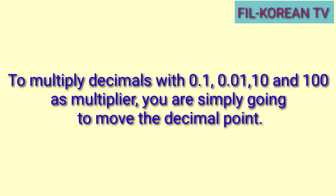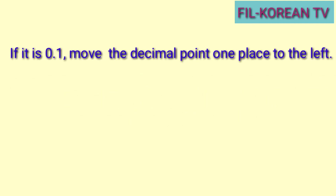To multiply decimals with one-tenth, one-hundredth, ten, and one-hundred as multiplier, you are simply going to move the decimal point. If it is one-tenth, move the decimal point one place to the left.